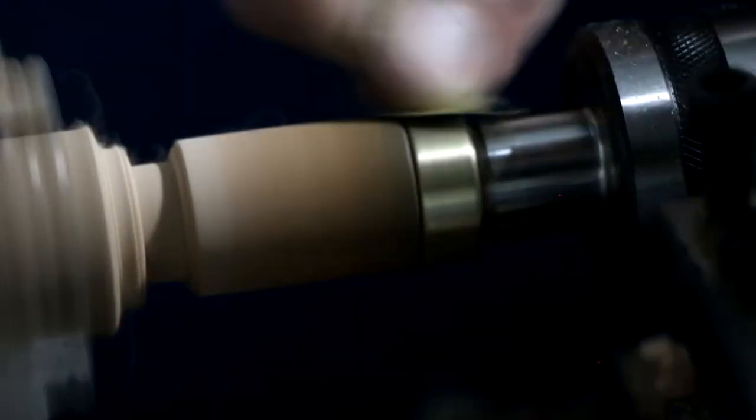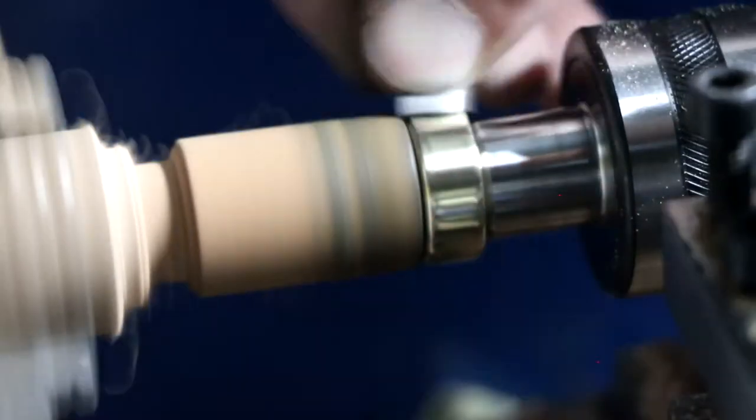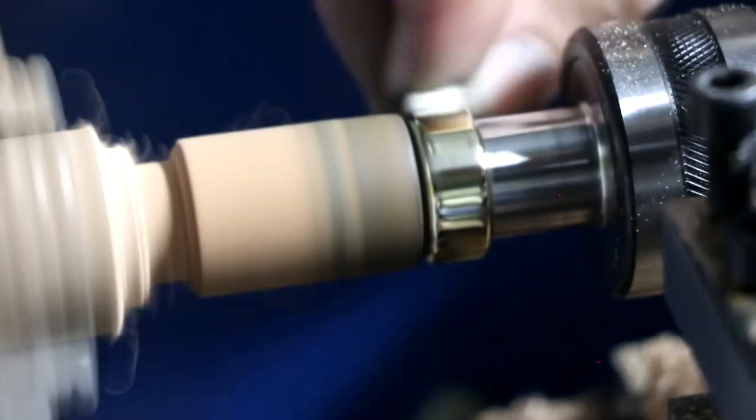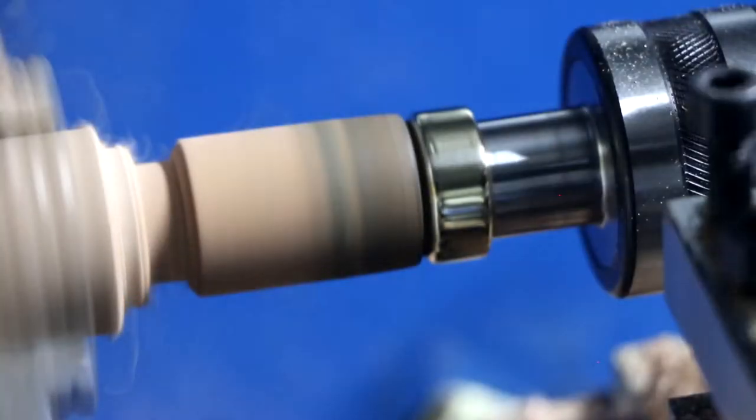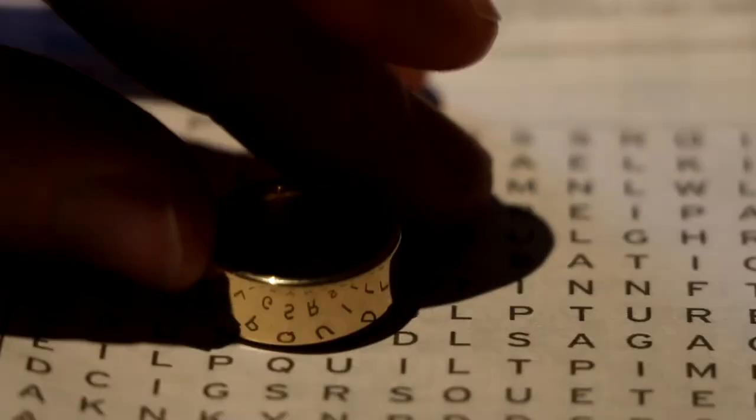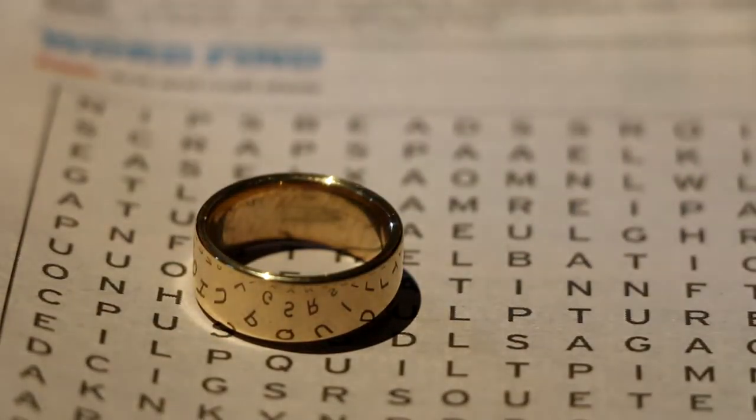Here I'm going from 240 grit sandpaper all the way up to 12,000 grit micromesh. Without polishing the ring it still leaves a really nice and shiny surface. You can see just how reflective it is as you can read the letters in the reflection of the ring.